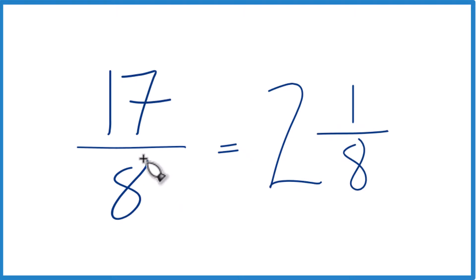And the improper fraction, 17 eighths, that's equal to 2 and 1 eighth. That's our mixed number.